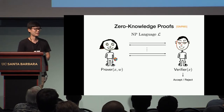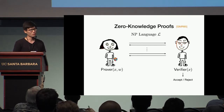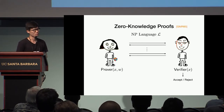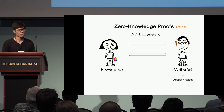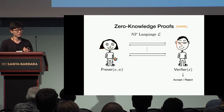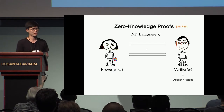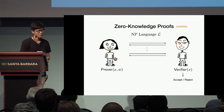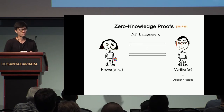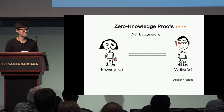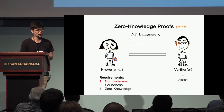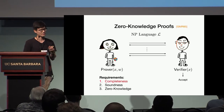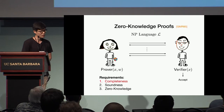A zero-knowledge proof system is basically a two-party protocol between a prover and a verifier, where the prover wants to convince the verifier that some statement X is contained in some language L. A zero-knowledge proof system should satisfy three properties: completeness, soundness, and zero-knowledge.